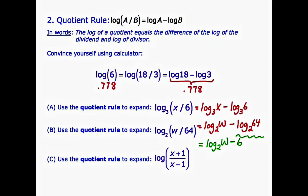For our final example, example C: use the quotient rule to expand the log of (x plus 1) over (x minus 1). We're taking the log of a quotient, which turns into a difference of logs: the log of the numerator minus the log of the denominator. There's no base given in part C, so it's an implied base of 10 — a common log. On this slide we learned the quotient rule: log of a over b equals log of a minus log of b. Let's go on to the next slide.